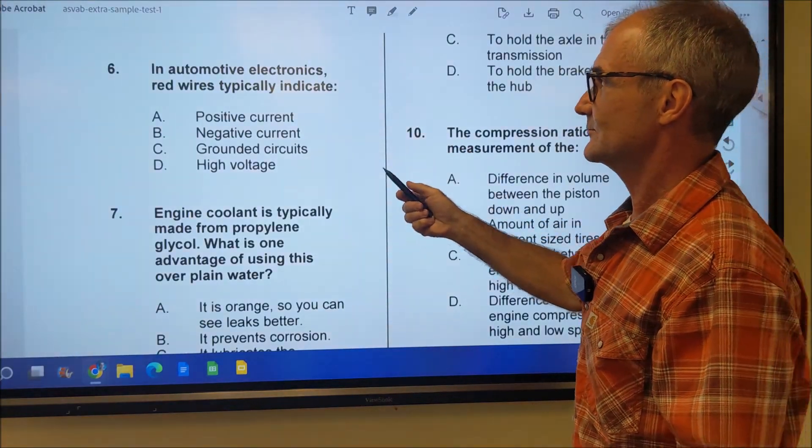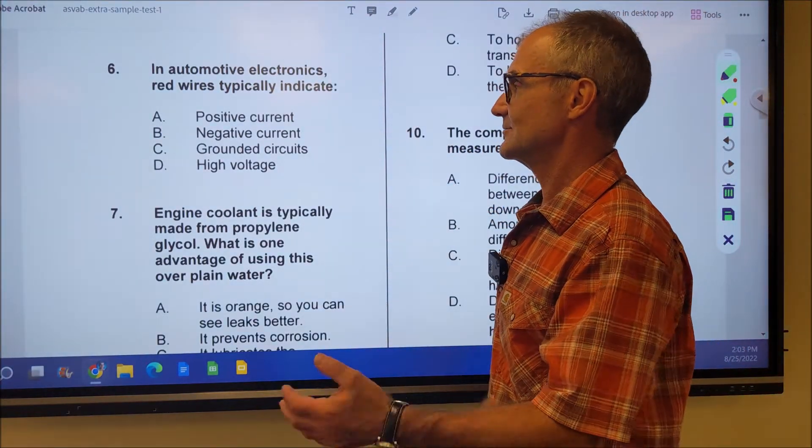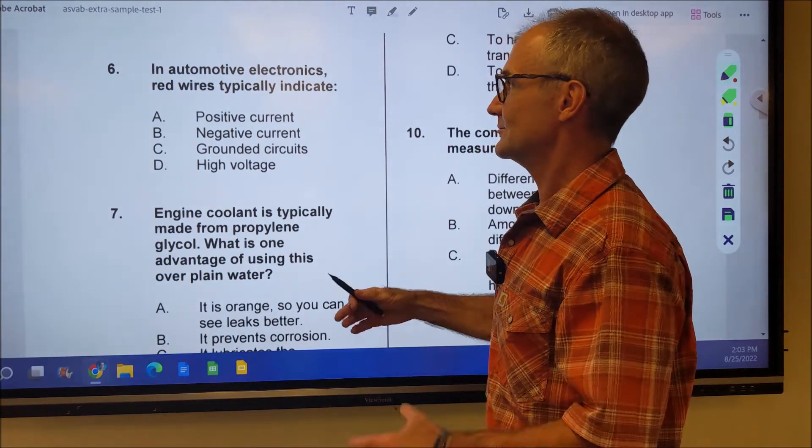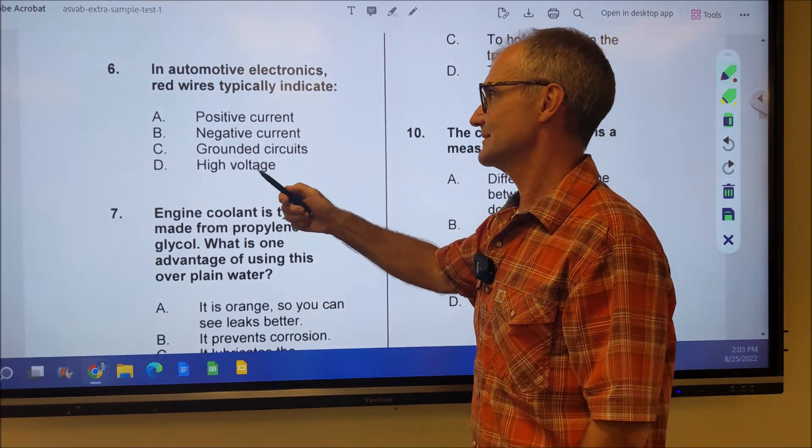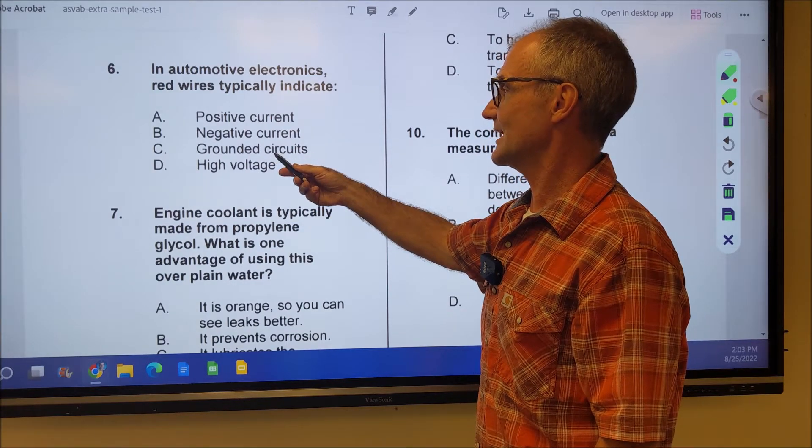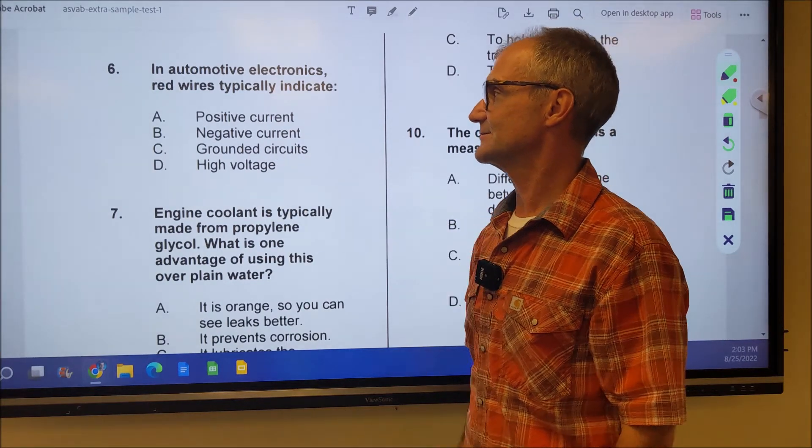In automotive electronics, red wires typically indicate, well, that's kind of all electrical. Red just is the color of hot. So that's always going to be positive current. Negative is black, grounded green, high voltage. That doesn't make any sense. So your answer is answer A.